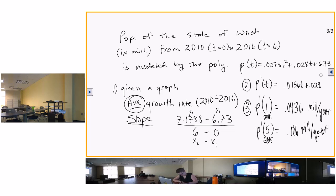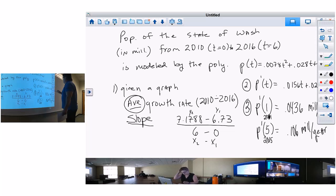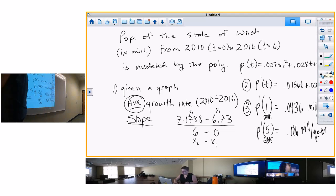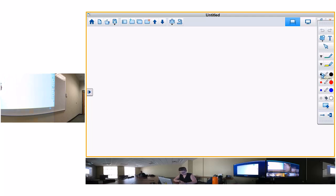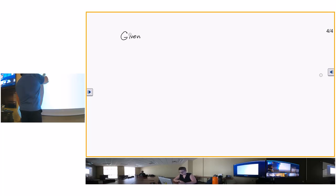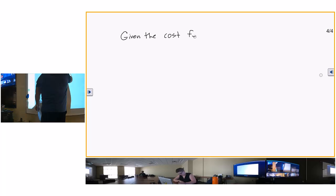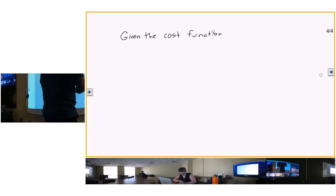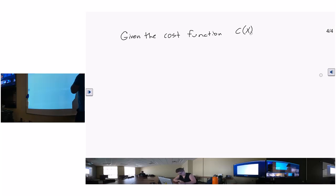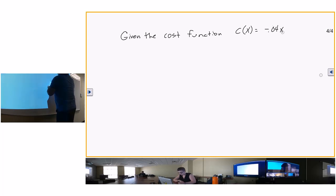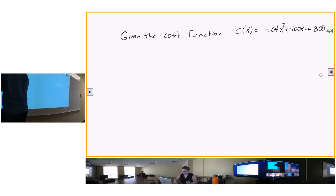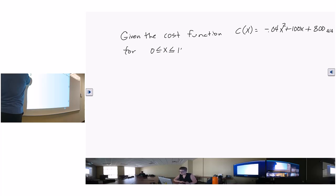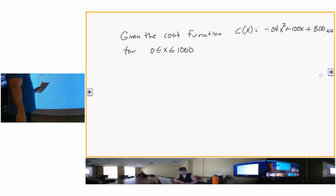And then now y'all do the fifth one, or the next one, which is p prime of five. That'll be what, 2015? So what is it? I come out with 0.106 million per year, which is what, 106,000 something like that.